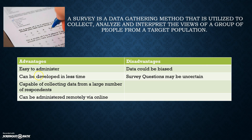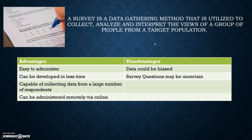Surveys are the third kind — they are easy to administer, can be developed in less time, and can accommodate a large number of participants, as they can be administered online. However, surveys could be biased, and sometimes questions may be unclear or limited, meaning there might be exceptions that respondents cannot express simply by ticking boxes.